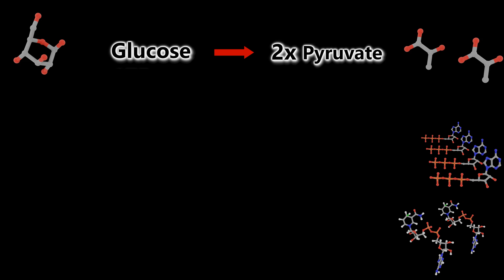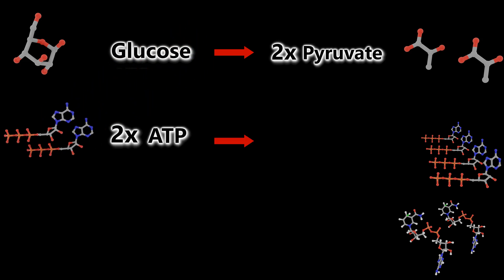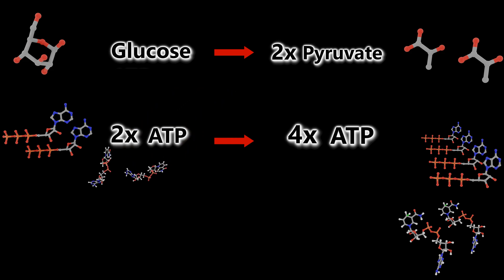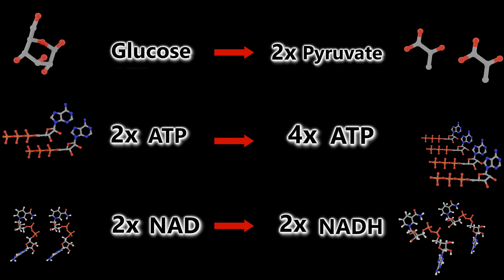Welcome to Animated Biology. This time we are taking a detailed look at glycolysis. Last time we took a look at just the two general phases of glycolysis and its main reactants and main products. So just a quick review of that: we saw that glucose was split into two pyruvate molecules. In the process, two ATP were burned and we produced four ATP for a net of two ATP. And then two NAD molecules were reduced into NADH molecules.